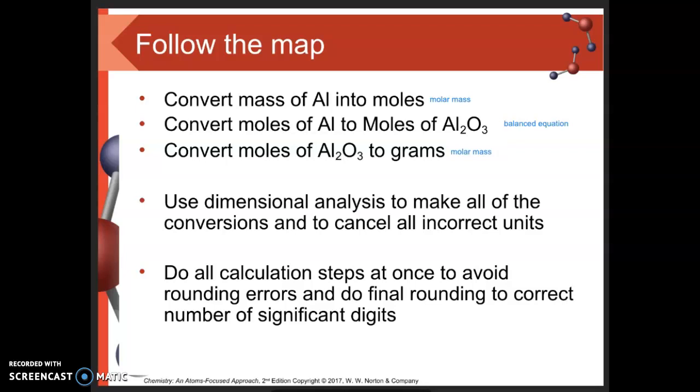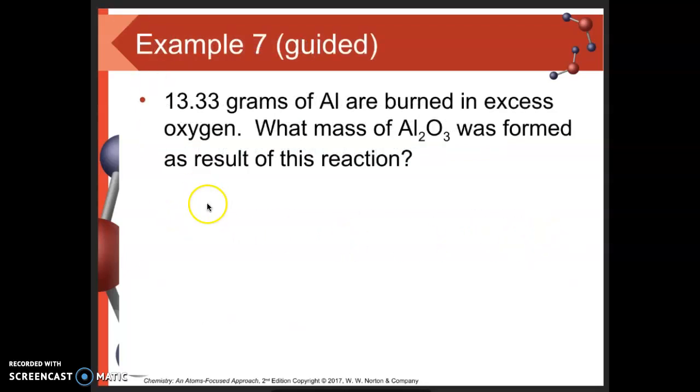Let's go back to this original question: 13.33 grams of aluminum in excess oxygen. Before any calculations, I need a balanced chemical equation. I have aluminum reacting with oxygen to make aluminum oxide, Al2O3. To balance this equation, I need four Al plus three O2 yields two Al2O3. Now I've got a balanced chemical equation and can start with my given information, 13.33 grams of aluminum.